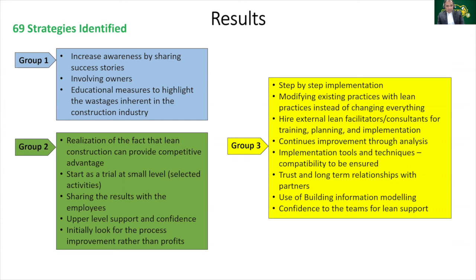In order to make a lean construction implementation successful, the owners or contractors should take all the stakeholders on board by developing trust and long-term relationships with them. The use of technologies like building information modeling can be very helpful in improving the visualization of the complete project and help in identifying the non-value adding activities. In the end, the lean teams should be fully supported in making lean construction effective.